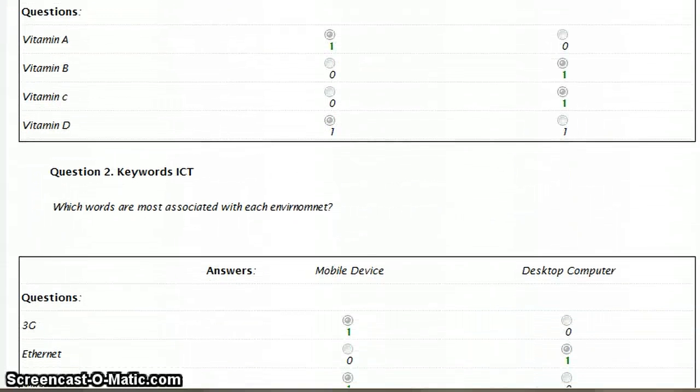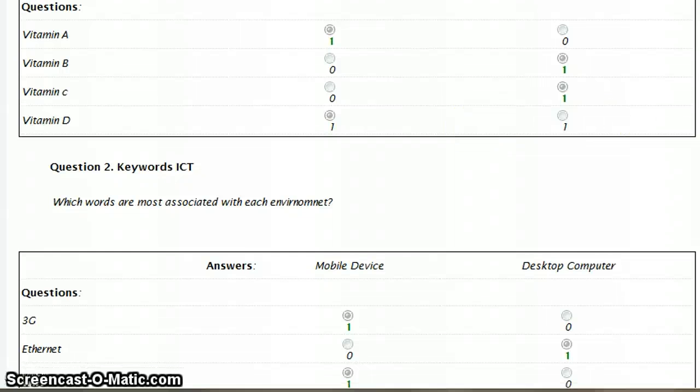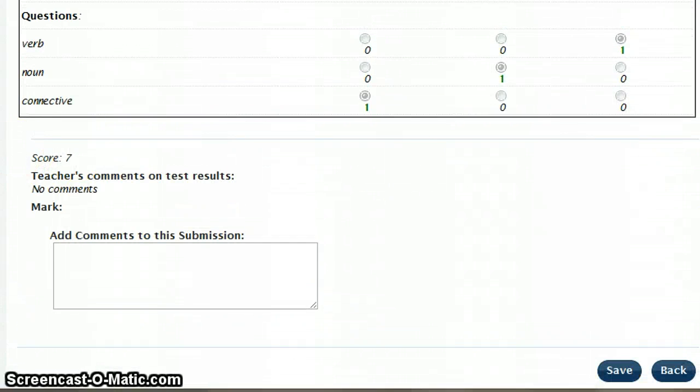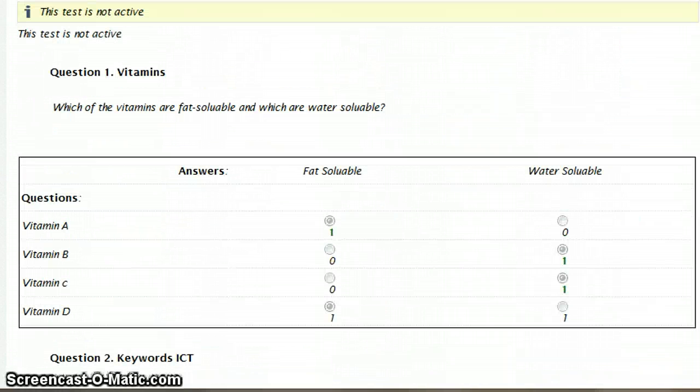What it does is it puts a green checkmark next to the scores you've got. So I've got one mark for each of those, and then it gives you a total score here for each of the questions attempted. And that's matrix questions.